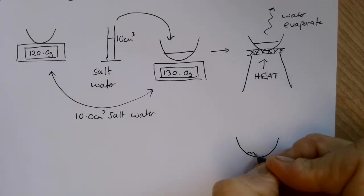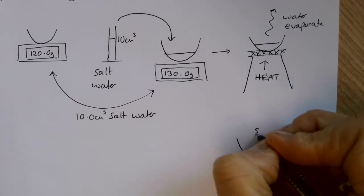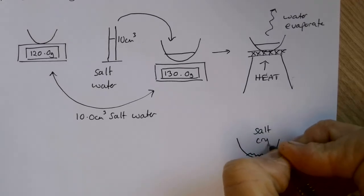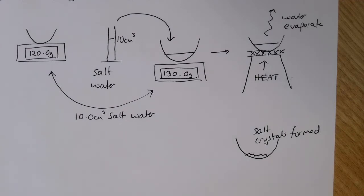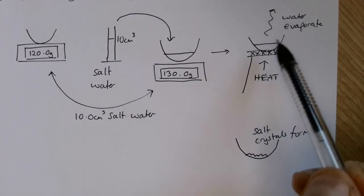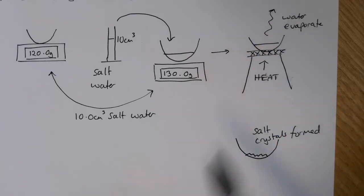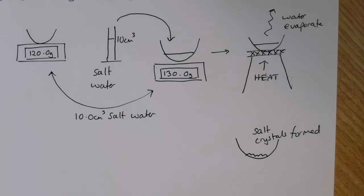Once we've done that, we will be left with our crucible or evaporating basin that now has some salt crystals. We would see some salt crystals having been formed. So our first observation is that the water disappears, it evaporates, and then we're left with some salt crystals at the end.